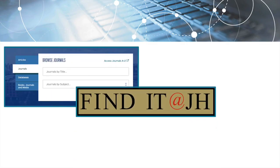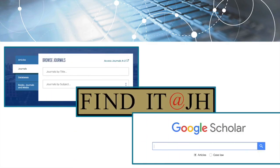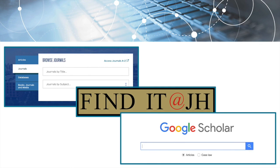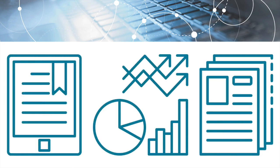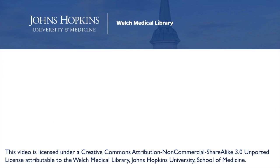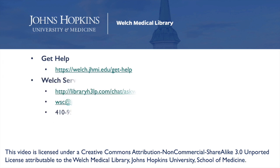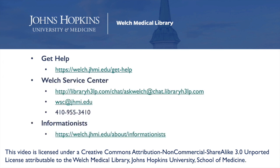With Welch's journal-finding platform, the Find It button, and the Find It links in Google Scholar, you have many ways in which to access full-text PDFs for journal articles. For more information or to get additional help finding full-text, visit the Get Help section on our website, reach out to the Welch Service Center through chat, email, or phone, or contact your informationist directly. See you next time.